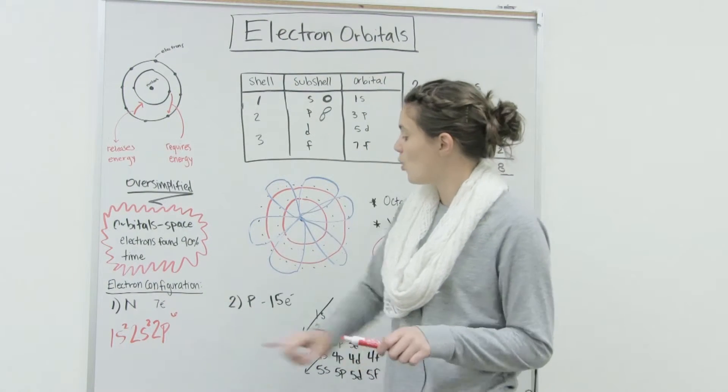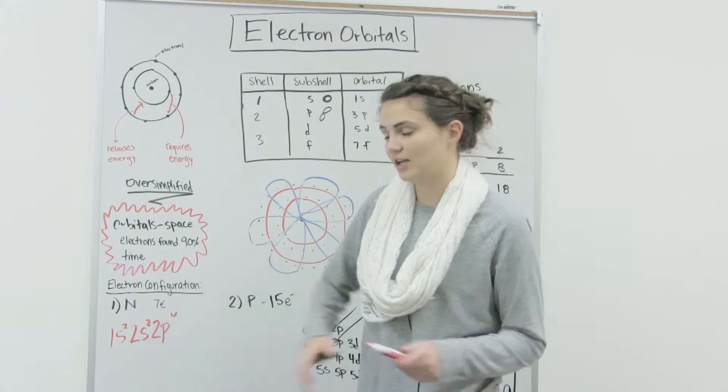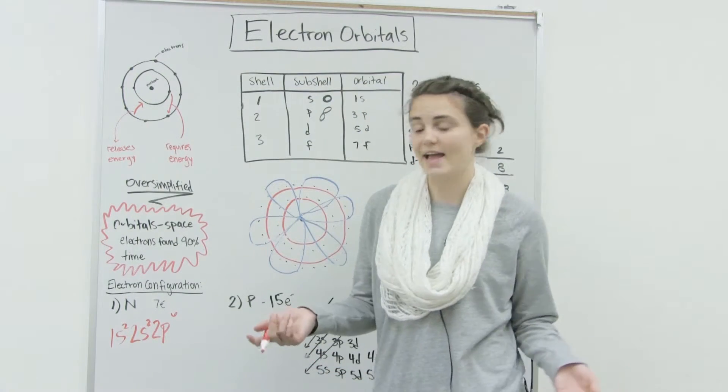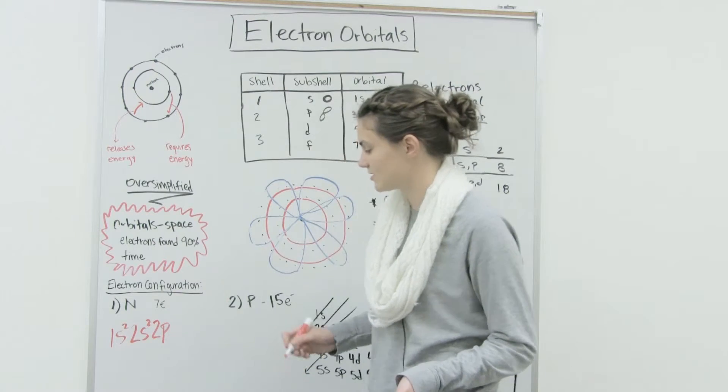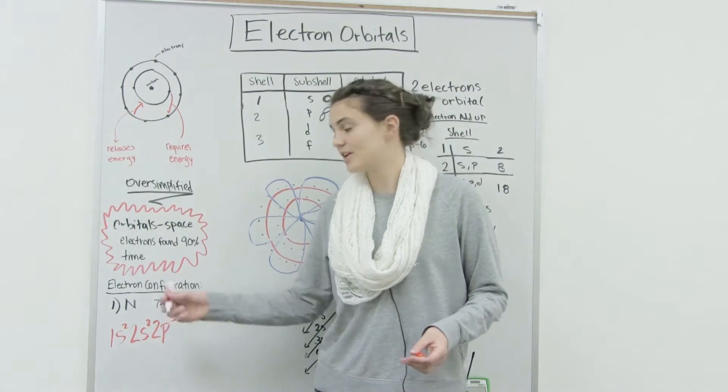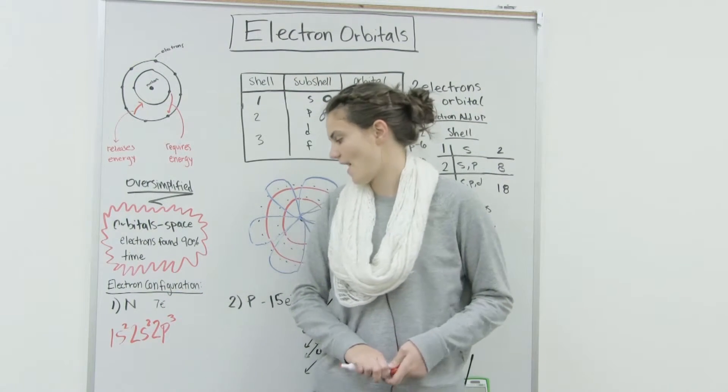But wait a second, we only need seven electrons because nitrogen's atomic number is seven. Two plus two plus six is actually 10. So we have three extra electrons. So this number actually is going to be three. So when you add all the superscripts up together, it should equal your number of electrons that you have.